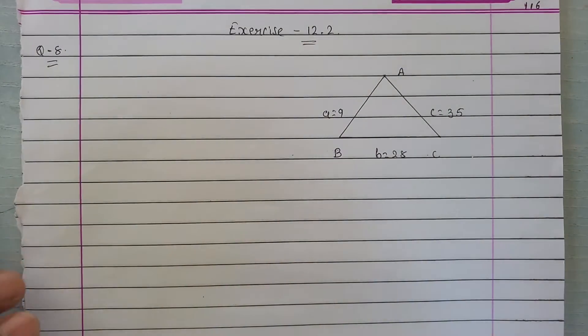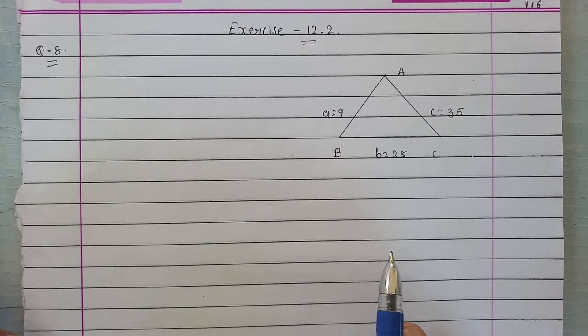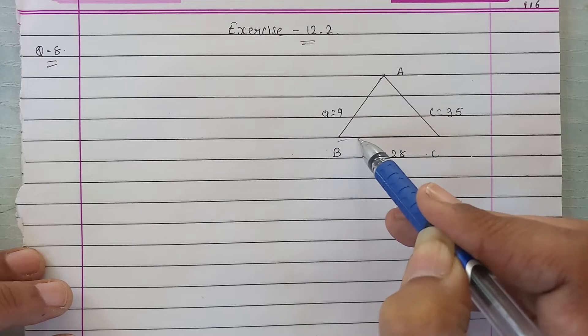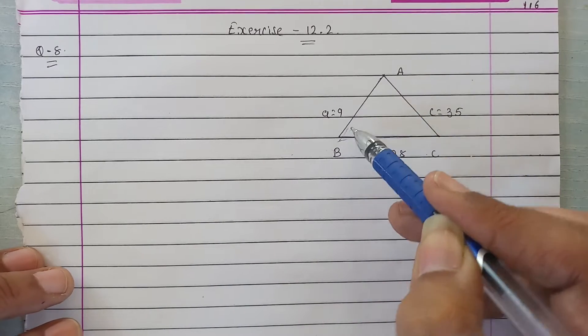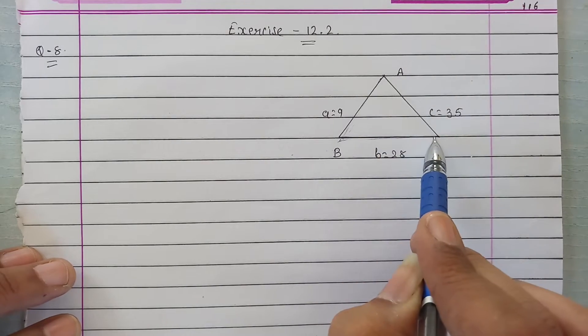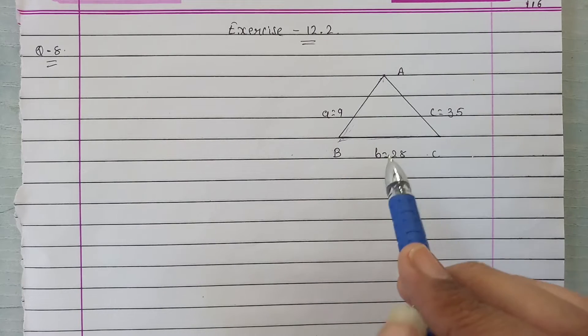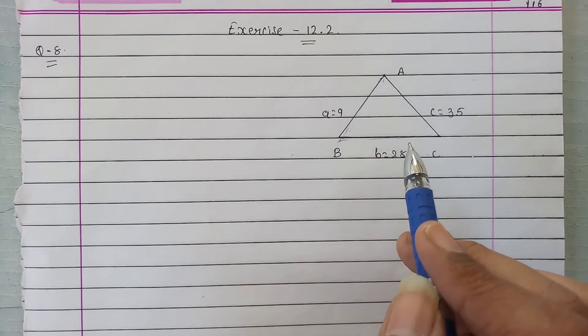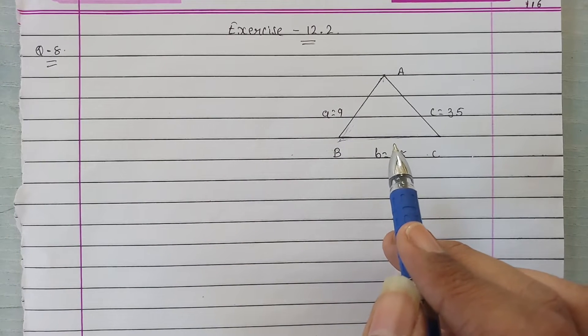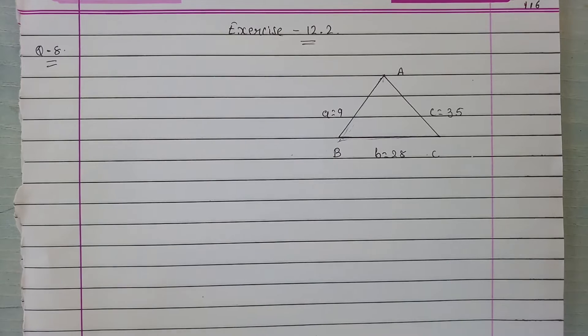As we have seen in the question, we have a floral design made of tiles. The tiles are triangular with dimensions of 9 cm, 28 cm, and 35 cm. The total design has 16 triangles. So we have to find the whole floral design area to calculate how much the polishing charge will be if the charge of 1 cm square is 50 paisa.